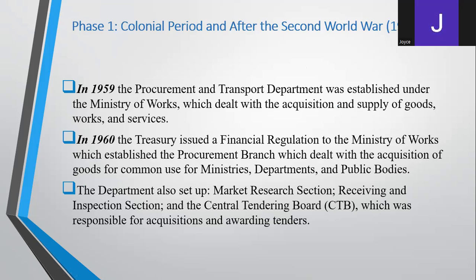During the colonial period, procurement was established under the Ministry of Works, which basically dealt with the acquisition and supply of goods, works, or services. In 1960, a procurement branch was established whose work was to acquire goods of common use for ministries, departments, and public bodies. Later, they established what was called the Central Tendering Board, which was responsible for acquiring and awarding tenders and also doing market research for the government.